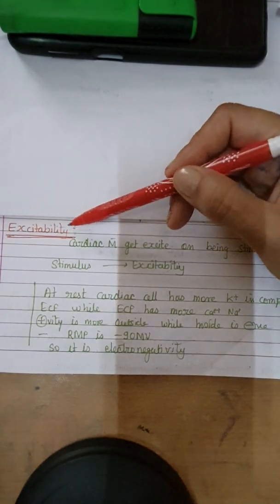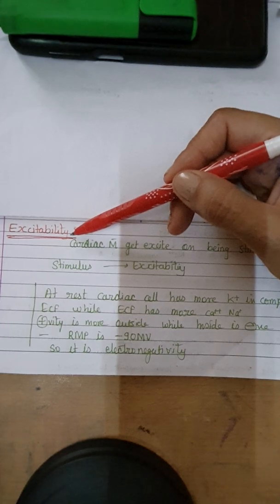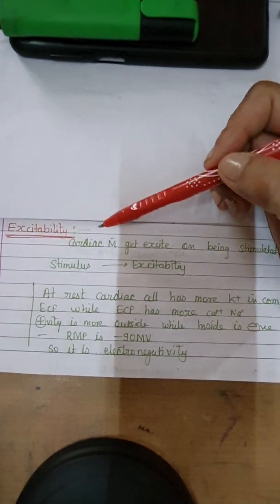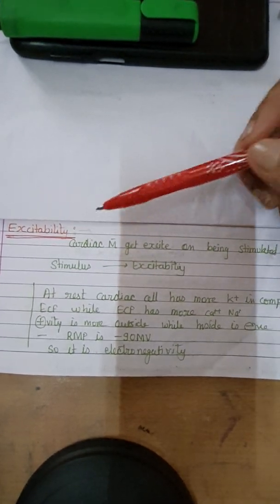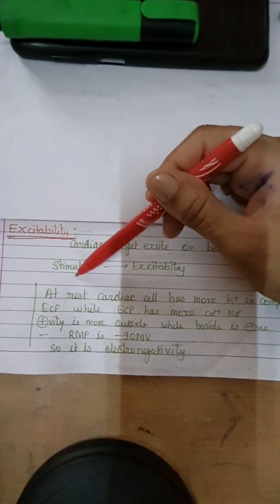Excitability is another electrical feature of cardiomyocytes. What is excitability? Excitability means cardiac muscle gets excited on being stimulated.